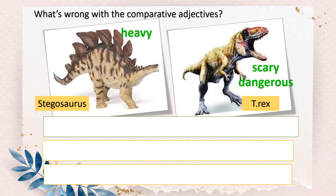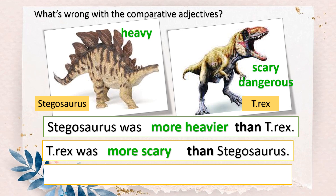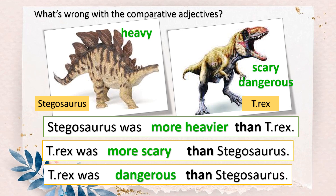Alright, let's see what's wrong with the comparative adjectives. You have Stegosaurus and T-rex, and the adjectives heavy, scary, and dangerous. You are going to compare them. Stegosaurus was more heavier than T-rex. T-rex was more scary than Stegosaurus. T-rex was more dangerous than Stegosaurus. Now, what's wrong with the comparative adjectives here? Look carefully.